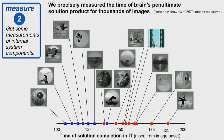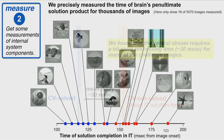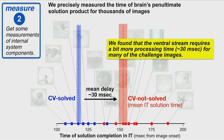Here are about 15 images and their times of decode — the time T-theta to reach a particular performance level of three D-prime units. Plotting that for all images, the color indicates whether they're from the challenge category or the control category. We measured this for thousands of images. The red dots (challenge) are generally later than the blue dots (control), though not perfectly — there's overlap. The mean delay is about 30 milliseconds. So on average, challenge images take 30ms longer to decode from IT than control images.